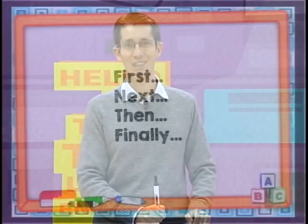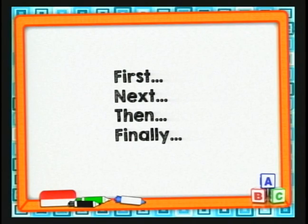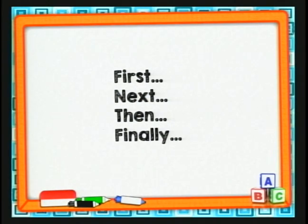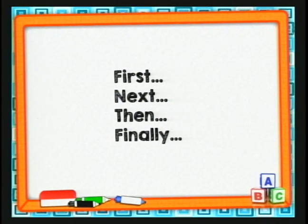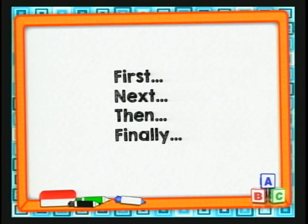Este es el vocabulario para poner en orden los eventos o las actividades. Vamos a iniciar con first — se pronuncia así, first. First quiere decir primero. Next quiere decir luego o seguidamente. Then quiere decir luego. Y finally — como ustedes ya imaginan — quiere decir finalmente. Tenemos: first, next, then, y finally.